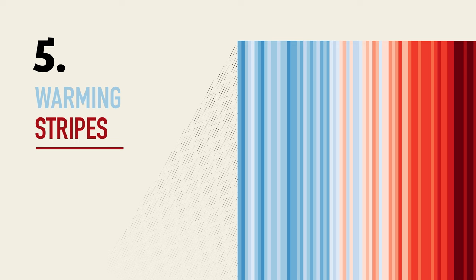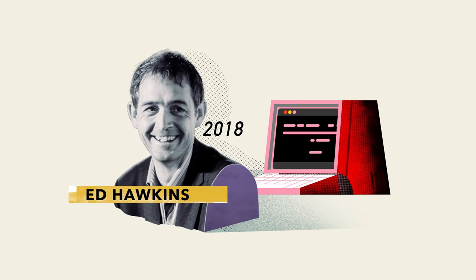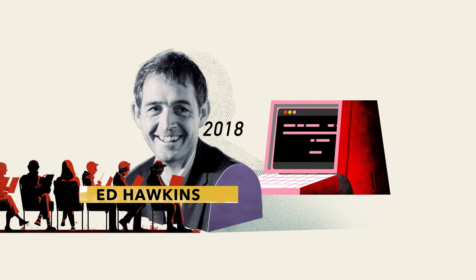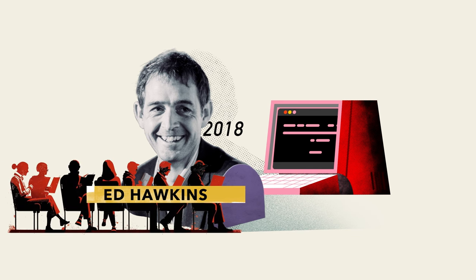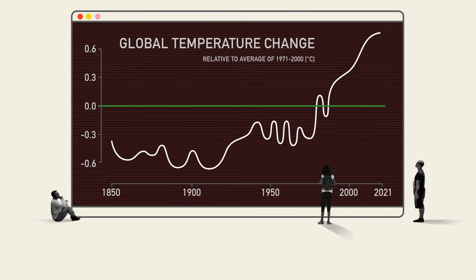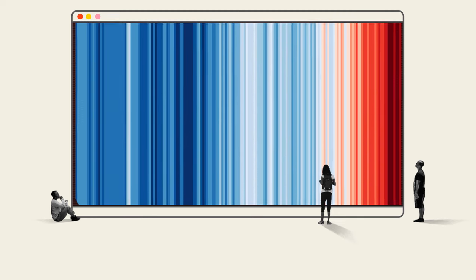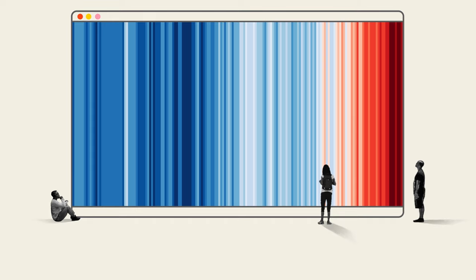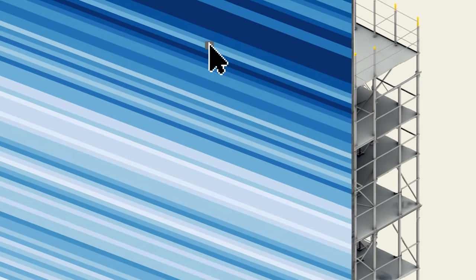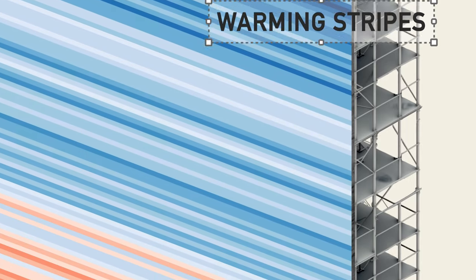Sometimes iconic status can be achieved almost accidentally. In 2018, scientist Ed Hawkins was invited to give a speech about climate change at Hay, a literary festival in Wales. He needed to convey the increase in global average temperatures to a largely non-scientific audience. So he devised a chart that used no words, just colours — a stunningly simple way of demonstrating how the planet had warmed since 1850. The chart, known as the Warming Stripes, uses blues to indicate cooler-than-average years and reds to show years with temperatures hotter than average.